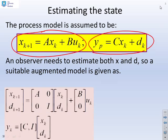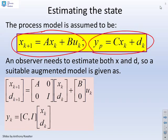So a suitable augmented model is given by something like this. You'll notice we've augmented the state dimension with the disturbance, and we've assumed that the disturbance stays constant every sample. In practice it won't.